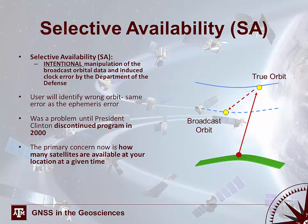Selective availability is the intentional manipulation of the broadcast orbit and induced clock error by the Department of Defense, intentionally manipulating the apparent location of the satellite, which ultimately affects your ability to position yourself within that constellation. The user identifies the wrong orbit — the same as an ephemeris error — but the key difference is that selective availability is intentional, whereas an ephemeris error is unintentional and occurs through time.